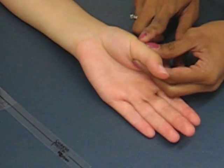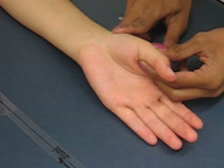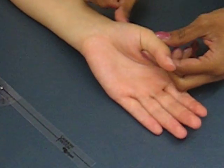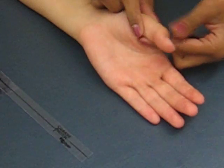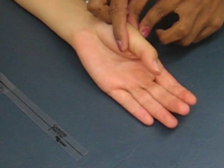The stationary arm will be along the first metacarpal bone, which will be right over here. And the moving arm is going to be along the proximal phalanx, which is right here.